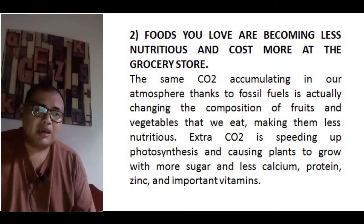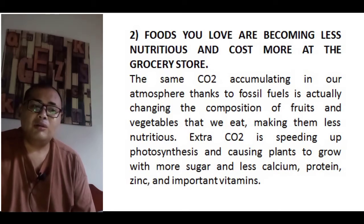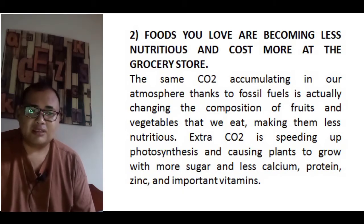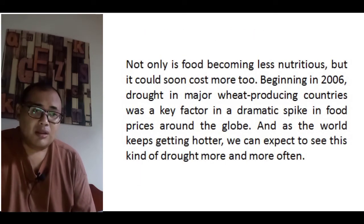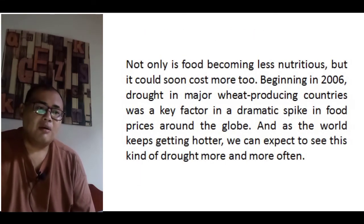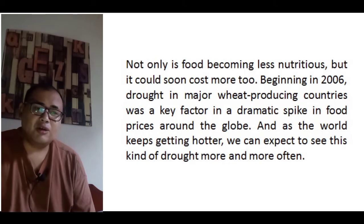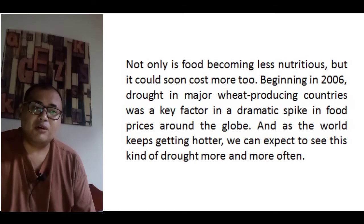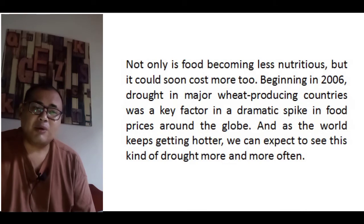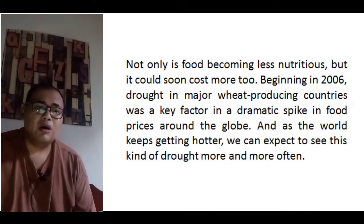Carbon dioxide accumulating in our atmosphere, thanks to fossil fuels, is actually changing the composition of fruits and vegetables, making them less nutritious. Extra carbon dioxide is speeding up photosynthesis and causing plants to grow with more sugar and less calcium, protein, zinc, and important vitamins. Not only is food becoming less nutritious, but it could soon cost more too. Beginning in 2006, drought in major wheat-producing countries was a key factor in a dramatic spike in food prices around the globe. As the world keeps getting hotter, we can expect to see this kind of drought more and more often.